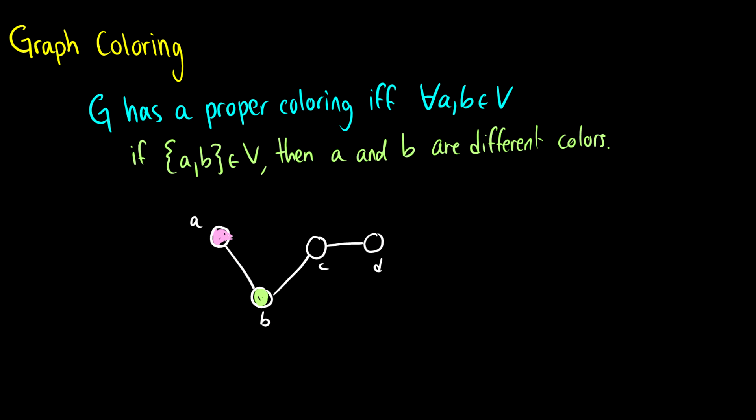What about C? Well, we can color C pink again, but that means when we get to D we can only color it green — or really any other color we want. Normally what we want in graph theory is to find the minimal number of colors needed to color a graph.